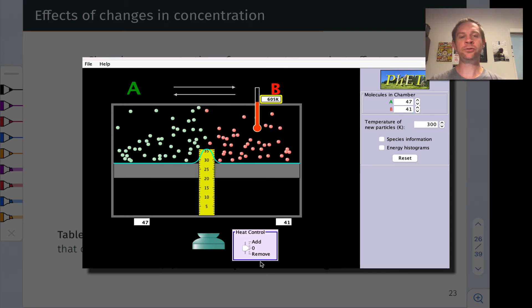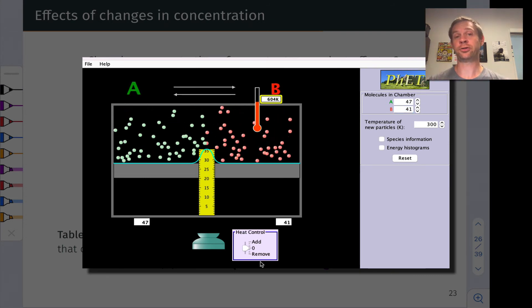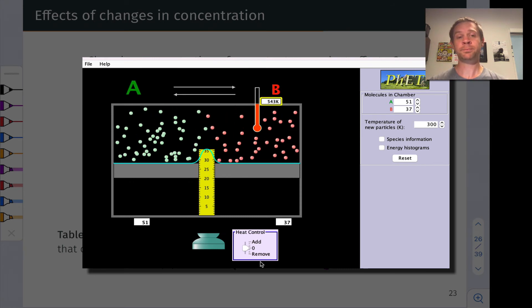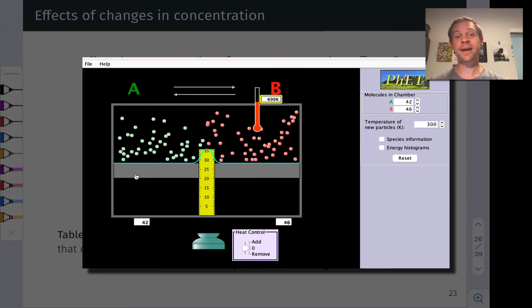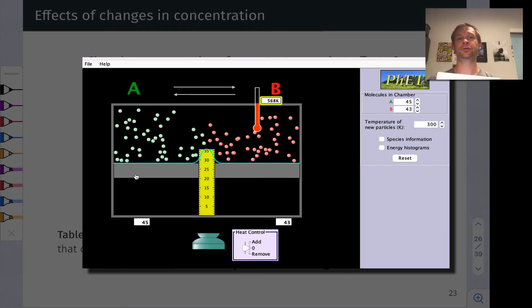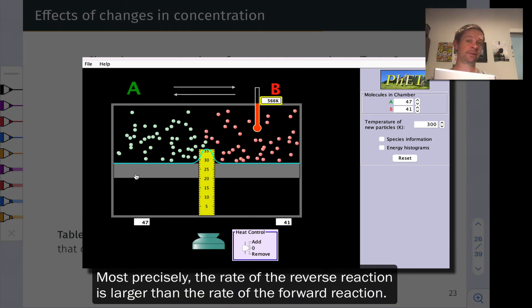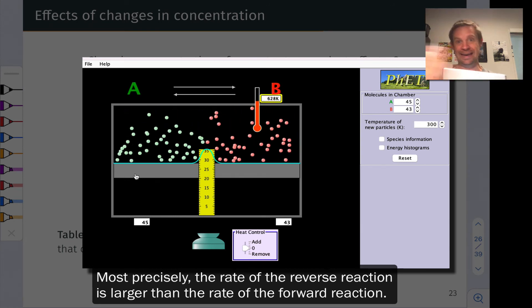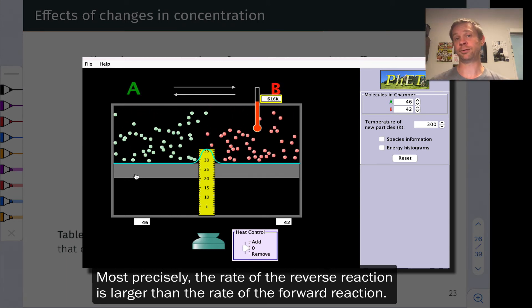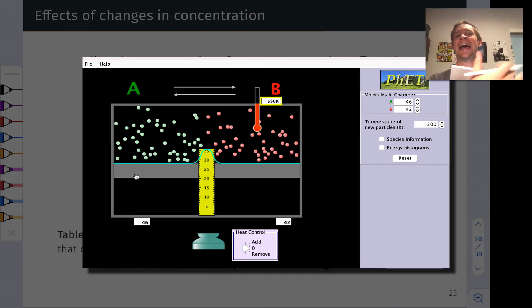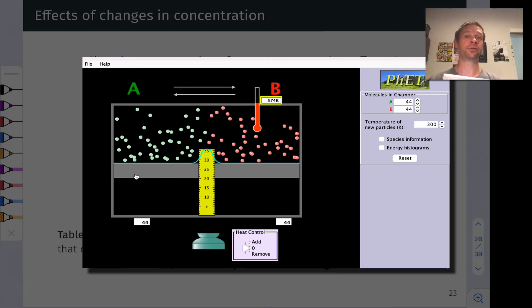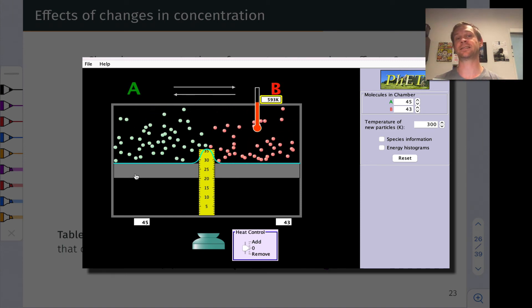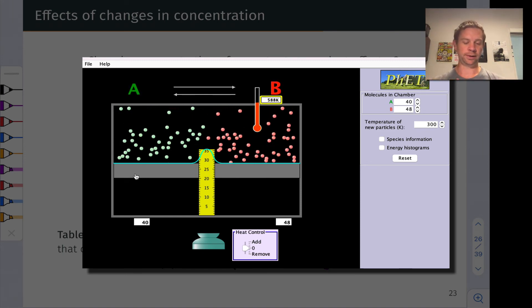This is what we do in changing the concentration of a reactant or product. Changing the concentration of a reactant has an analogous effect. Removing a reactant moves the system towards reactants—the reverse reaction occurs. Net, we have reaction in the reverse direction. Adding a reactant will push the reaction forward toward products so that the system consumes that excess reactant to return to chemical equilibrium.